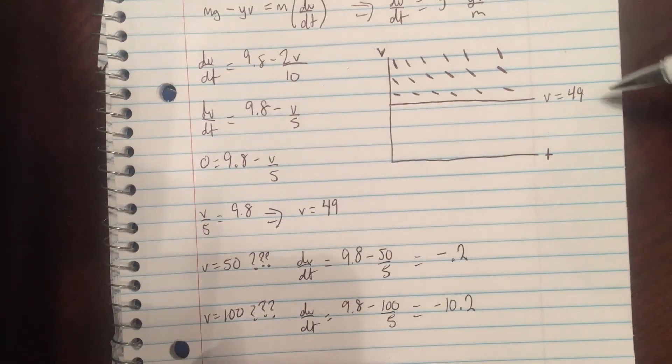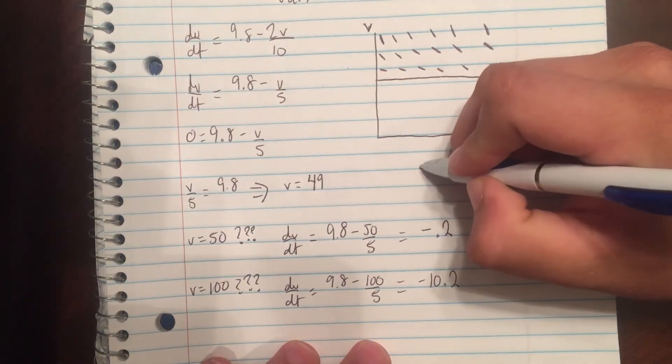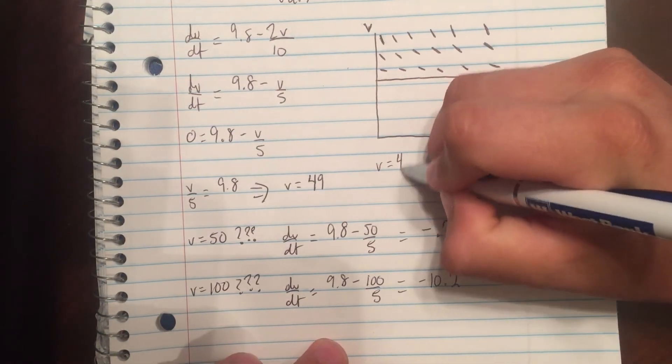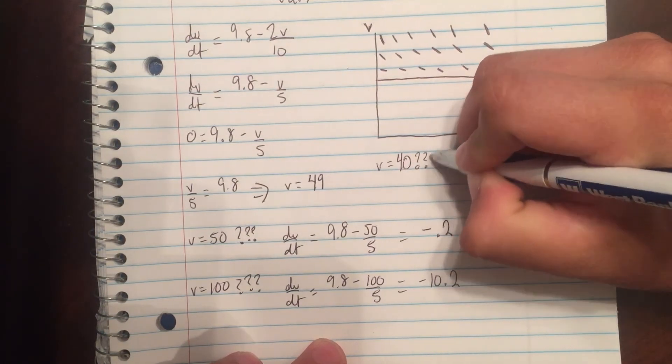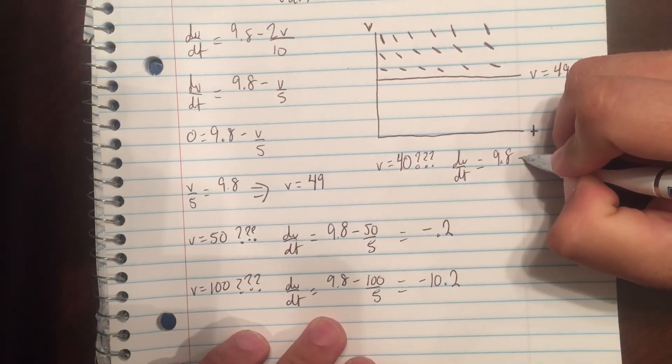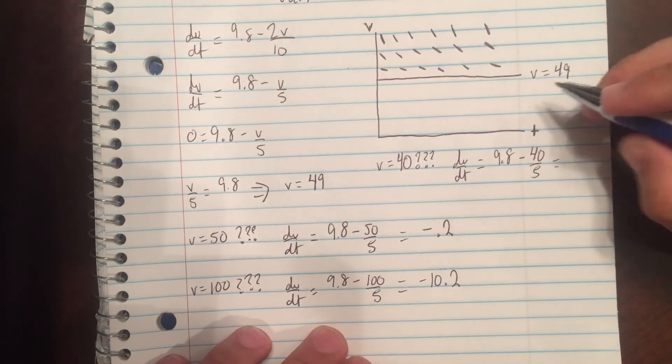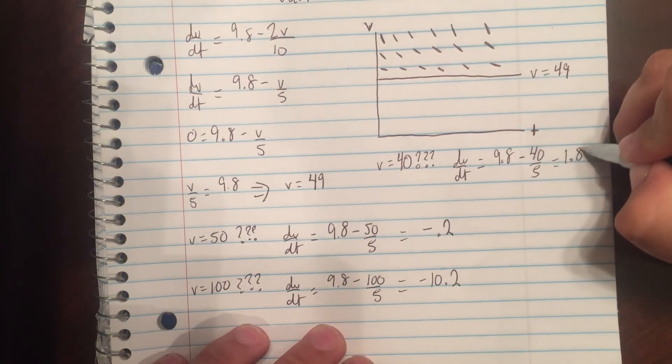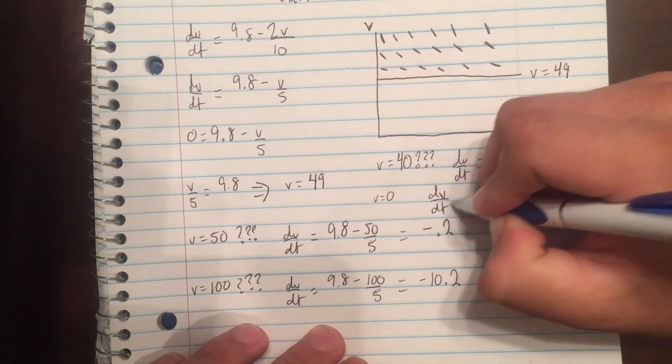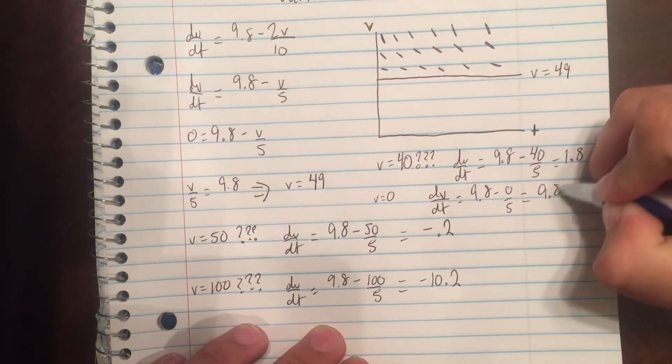Next up, we're going to test for what's below that. Let's say v equals 40. We're going to have dv dt equals 9.8 minus 40 over 5. 40 over 5 is 8, so we're going to have 1.8. What if we have v equals 0? dv dt is going to be equal to 9.8 minus 0 over 5, which equals 9.8.